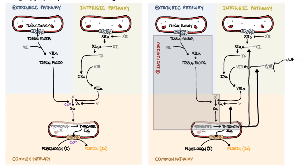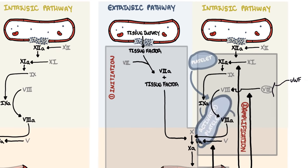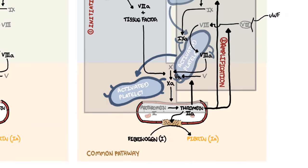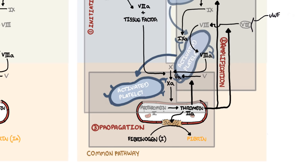Step 2 is amplification, where the small amount of thrombin generated from the extrinsic pathway activates factors 5, 8, and 11, which in turn activates the platelets. Activated platelets and the activated factors then lead to the propagation step, where activated factors form the intrinsic tenase complex, resulting in factor 10a activation. Activated factor 10a binds with factor 5a to form the prothrombinase complex.